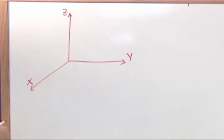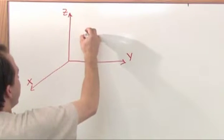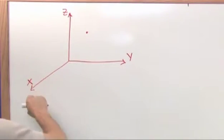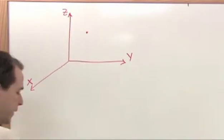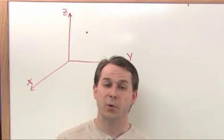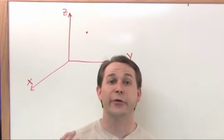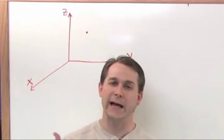So in Cartesian coordinates, it takes three numbers to specify where a point is in space. If you have a point here, you need to know the x-coordinate, which is just the distance along x, the y-coordinate, the distance this way, and the z-coordinate, the distance this way. So if you have a point in three-dimensional space, it takes three numbers to represent that point: x, y, and z.